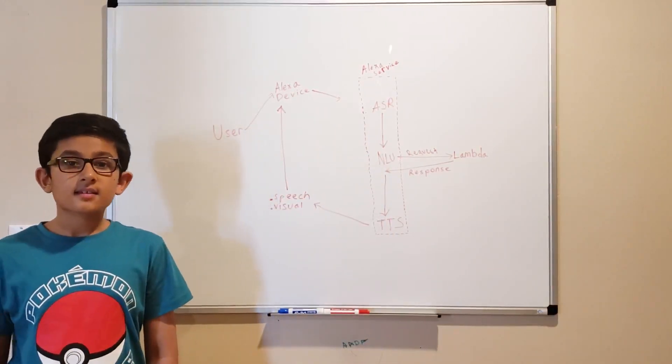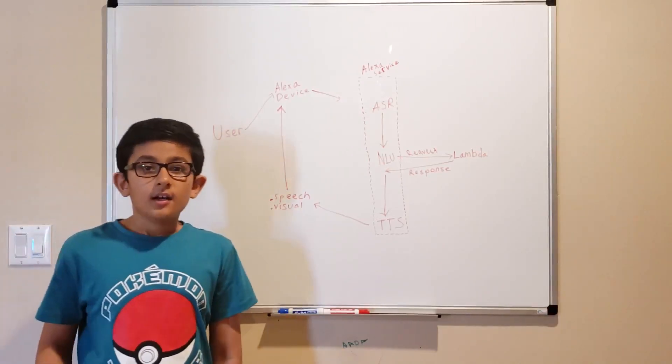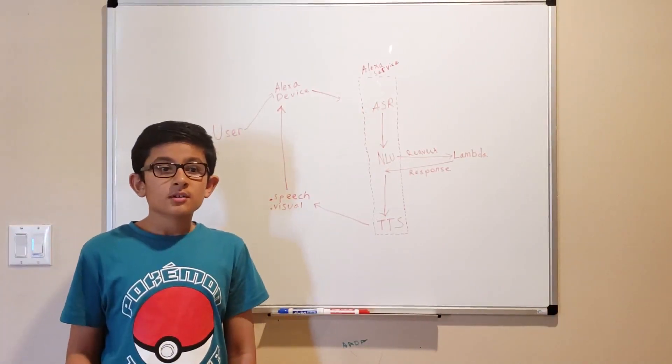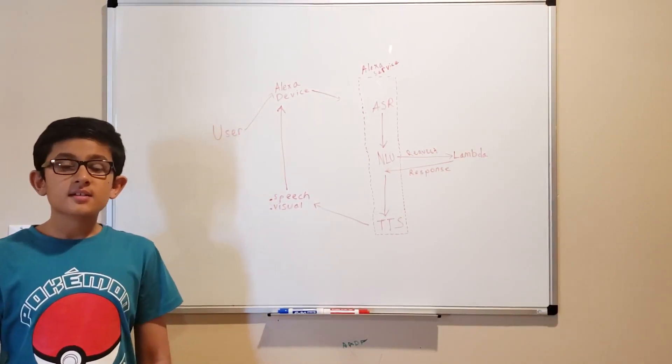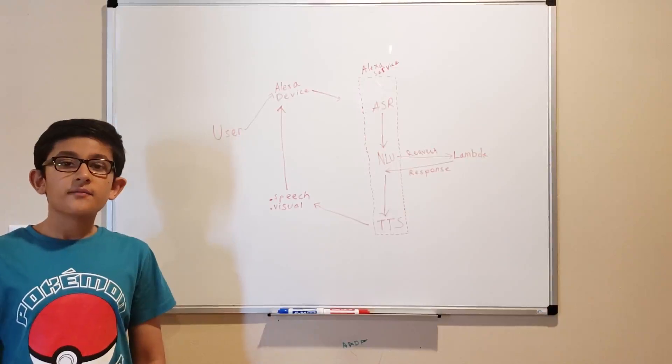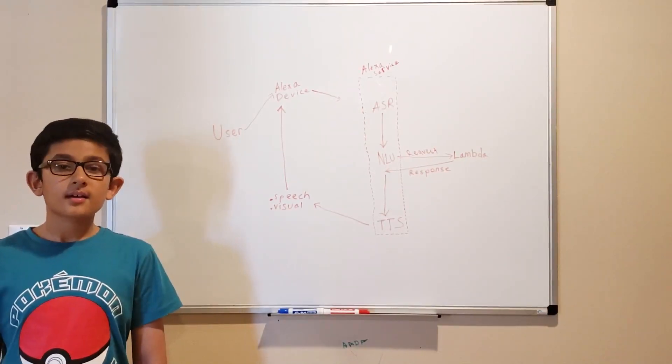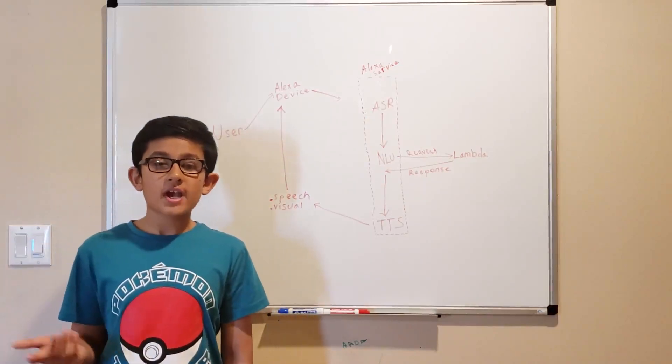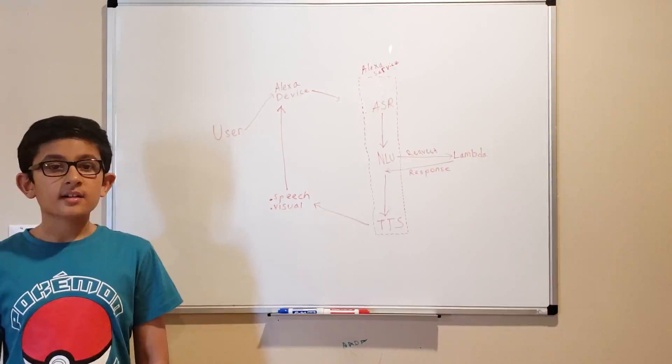So once it's in the Alexa service, ASR starts to work on it. Automatic speech recognition turns what you're saying into text. Basically, it figures out what you're trying to say. That can be difficult because there can be other chatter in the room, some people have accents, but ASR can handle it.